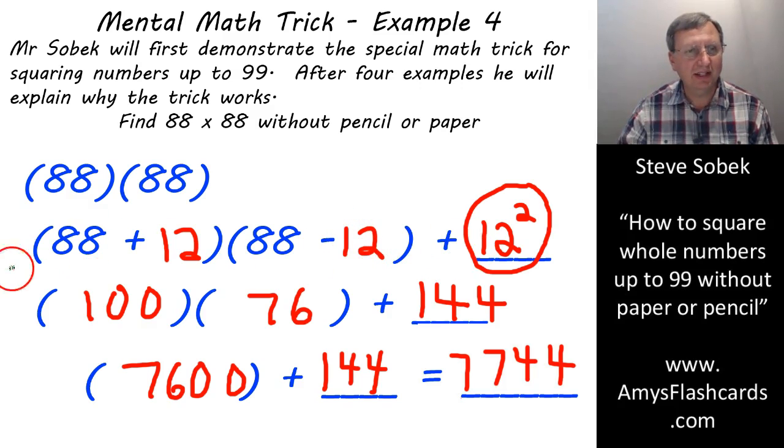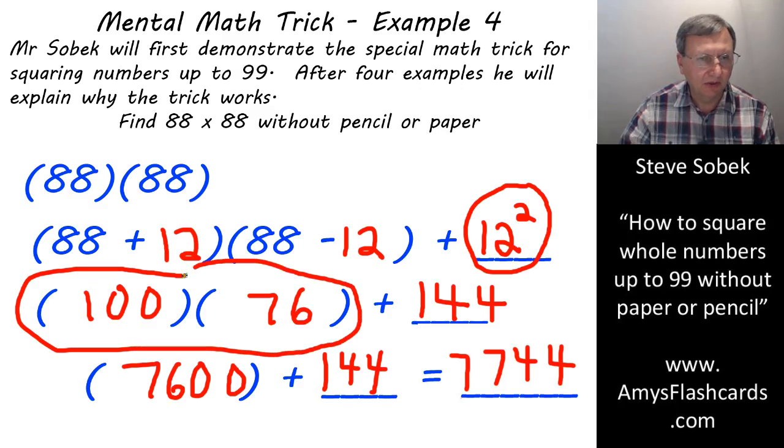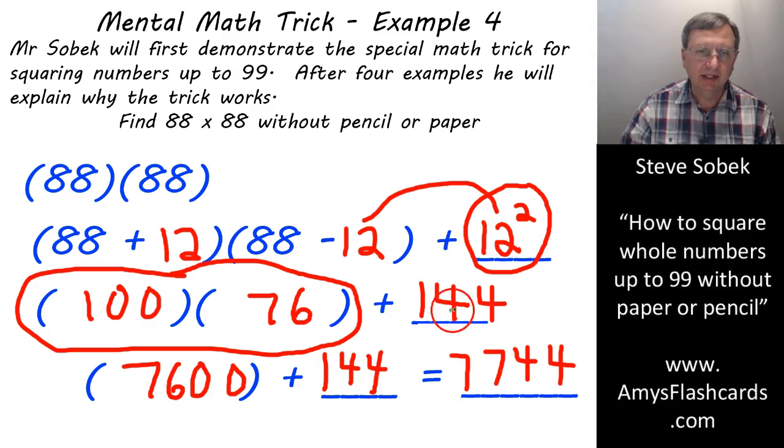And so that's how to use this mental math trick. We're always adding and subtracting the same number so that we end up with an easier multiplication problem to do here. But then we understand that that's not exactly equivalent to the square of the number that we started with. We have to compensate by adding the square of that, whatever this number is here, we have to add the square of that over here, and then we end up with a final answer. That's the trick.